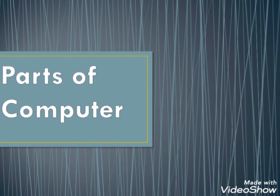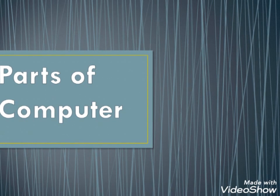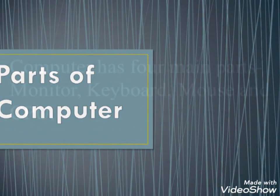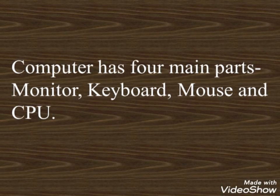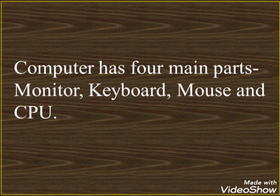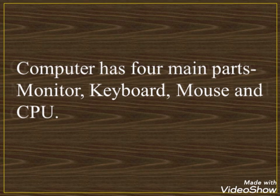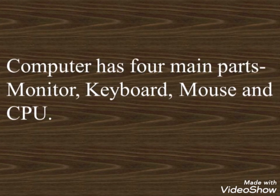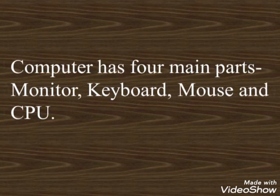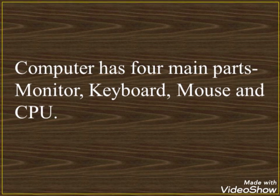Hello everyone, welcome to another computer class. Today's topic is parts of the computer. Basically, a computer has four main parts: monitor, keyboard, mouse, and CPU. Each part has a special function. You have already learned about them in a previous class, so let's discuss their functions.